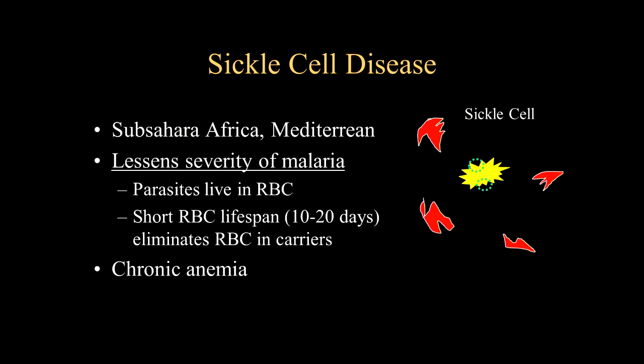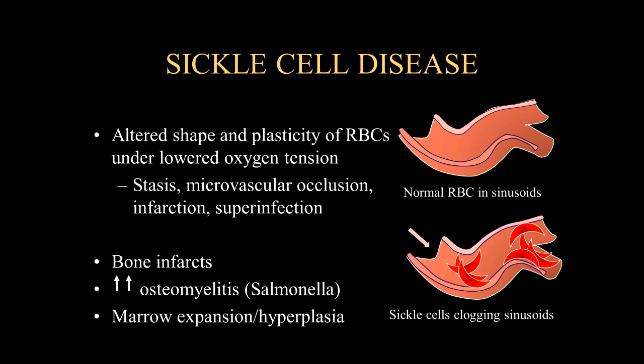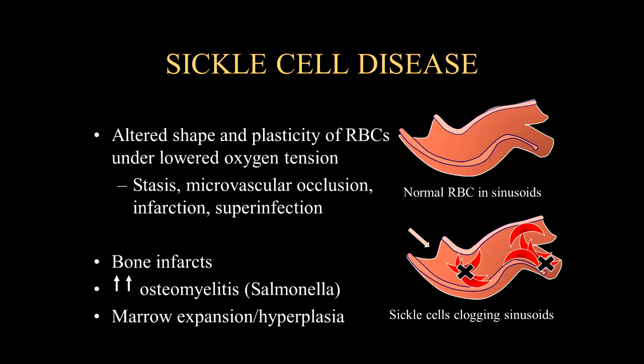Unfortunately, there still is the chronic anemia that occurs with sickle cell. Normally, red blood cells flow with their biconcave shape through the sinusoids and capillaries, but with sickle cell, they become clogged within the sinusoids. This leads to stasis, microvascular occlusion, and eventually infarction of the soft tissues as well as the bone. Additionally, we can have superinfection with osteomyelitis involving the bone, with salmonella being the primary pathogen in these patients.